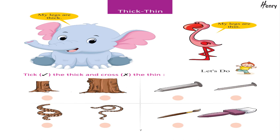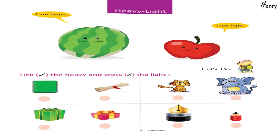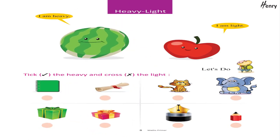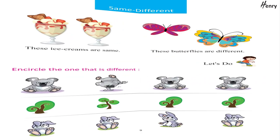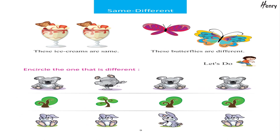Let's do: tick the thick and cross the thin. Heavy, light — I am heavy, I am light. Let's do: tick the heavy and cross the light. Same, different — these ice creams are the same, these butterflies are different. Let's do: encircle the one that is different.